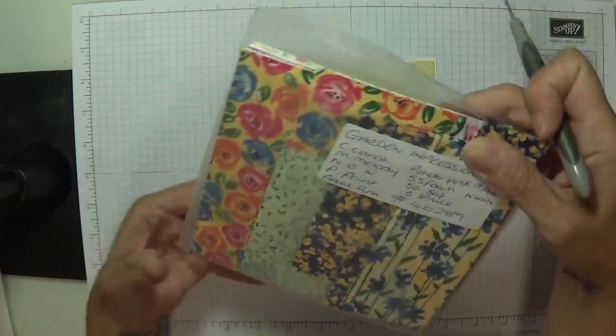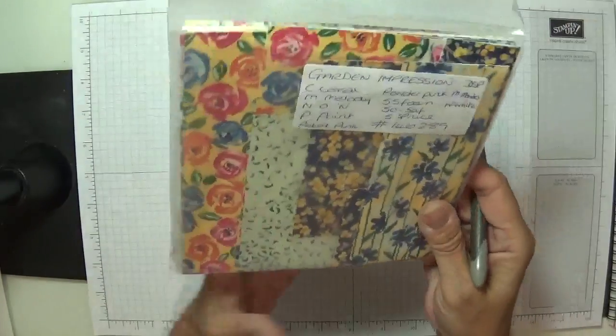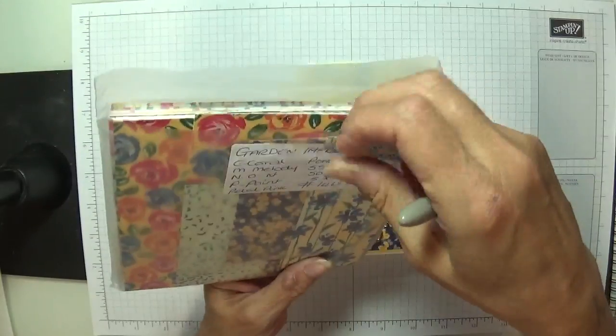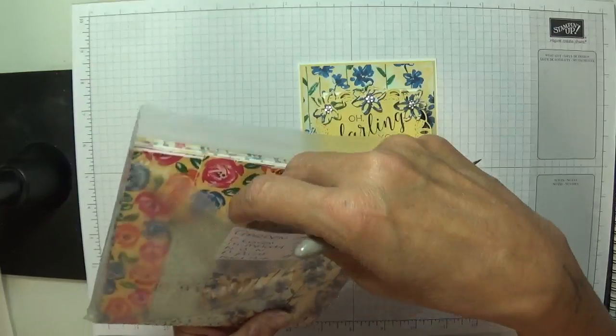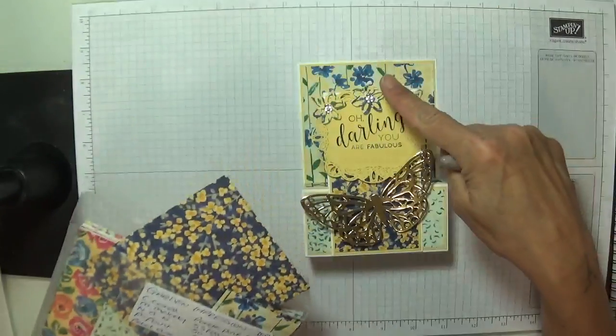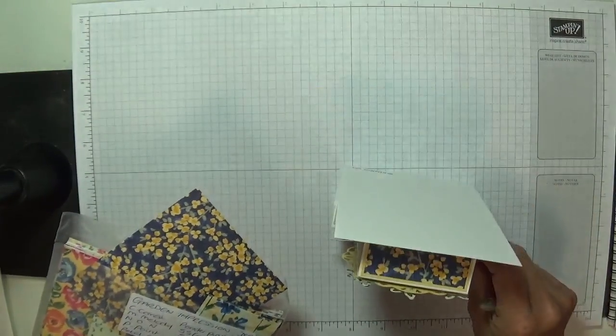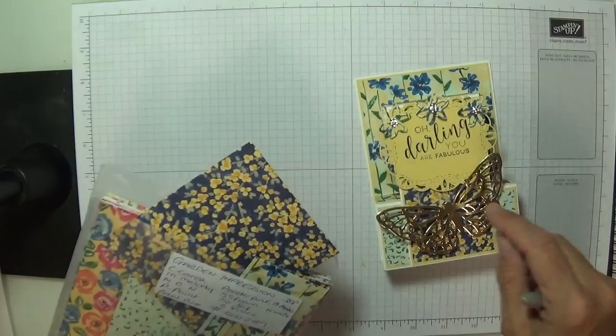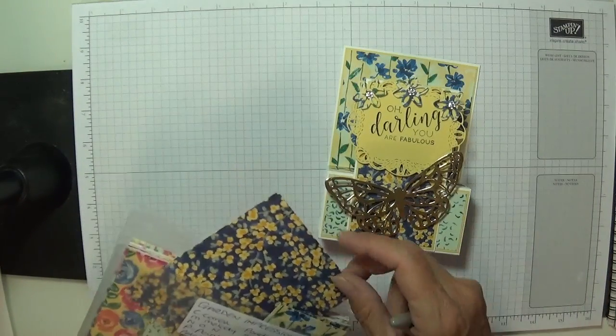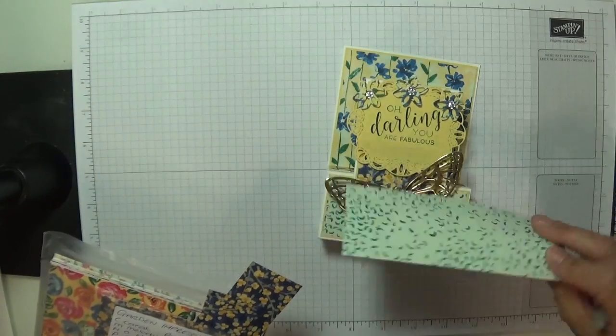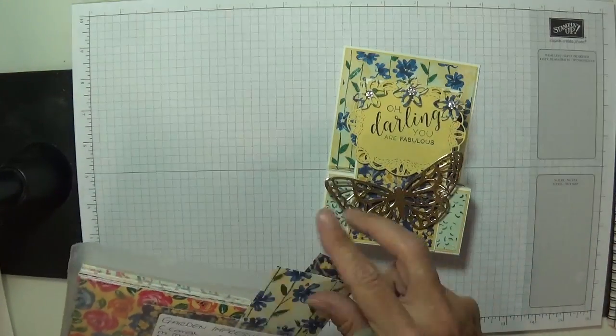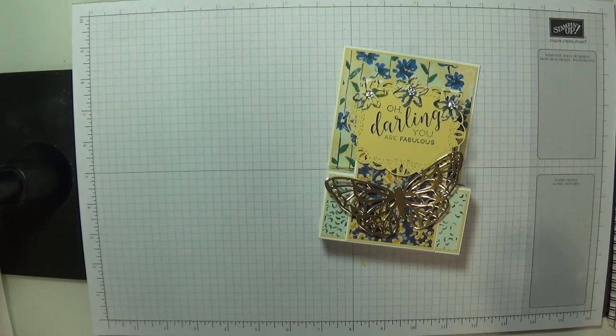I've used the garden's impressions designer series paper. I think this is beautiful. And I've used this one and this one. Just stunning. Because I wanted this box at the front to be a little bit more different than the back. When I cut this piece, I cut it the wrong way so I've turned it over.